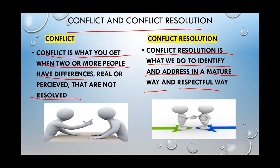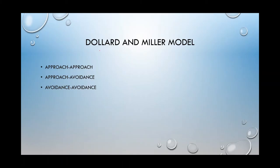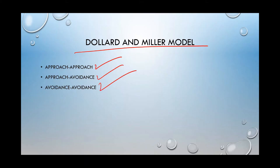There are various models which explain the different types of conflict. Among them, we are going to understand: first, Dollard and Miller model; and second, Rummel's model. According to the Dollard and Miller model, three types of conflict situations may arise: first, approach-approach conflict; second, approach-avoidance conflict; and third, avoidance-avoidance conflict.